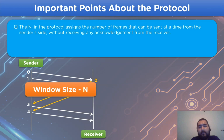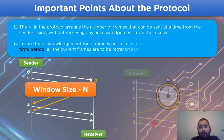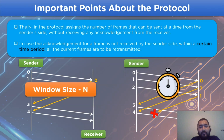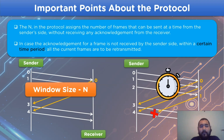In case the acknowledgement of a frame is not received within a certain time period, then all the frames from that sequence number are to be retransmitted in the channel. This point is to be remembered properly because it will be the key point in solving a question related to the Go-Back-N ARQ protocol.